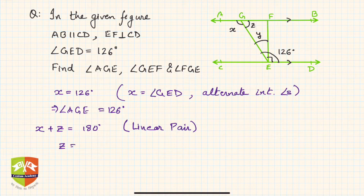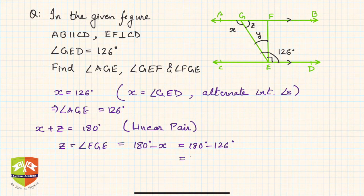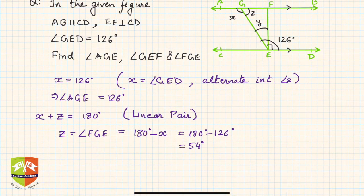...is nothing but 180 degrees minus X. So 180 degrees minus 126 degrees. Hence it is coming out to be 54 degrees. So angle FGE is 54 degrees. Clear?